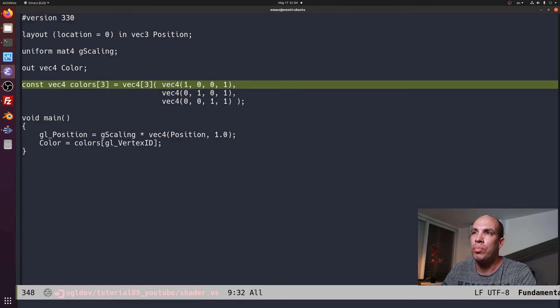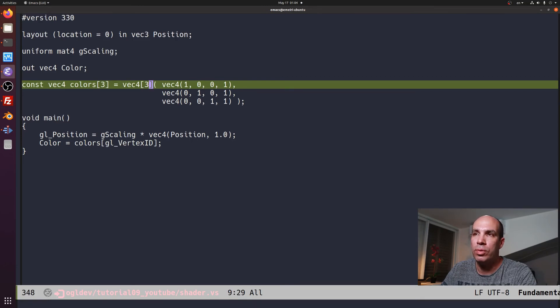Okay, so this is how we initialize arrays of vectors. And in order to initialize the output color, we use a system variable called glVertexID, which simply counts the number of vertices or provides the index of the current vertex.